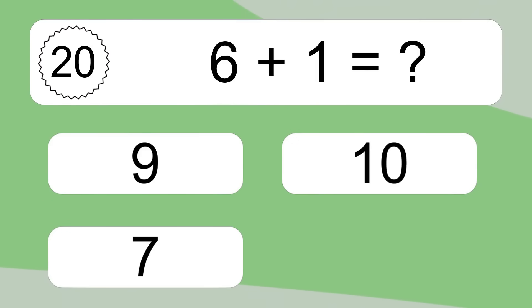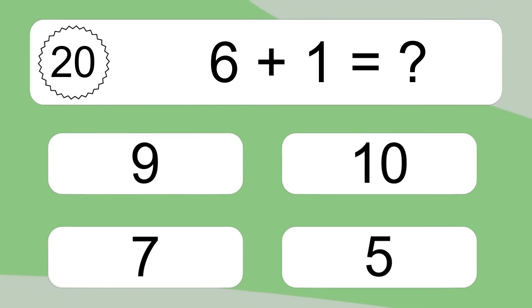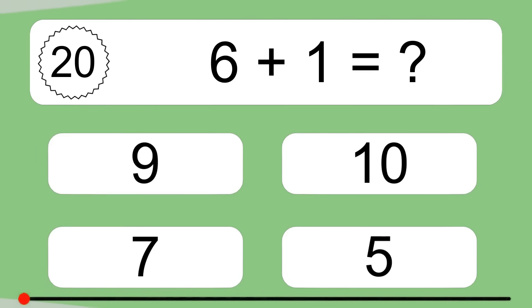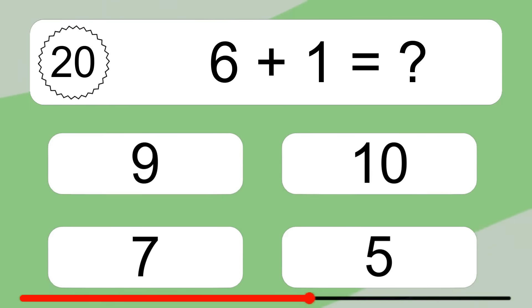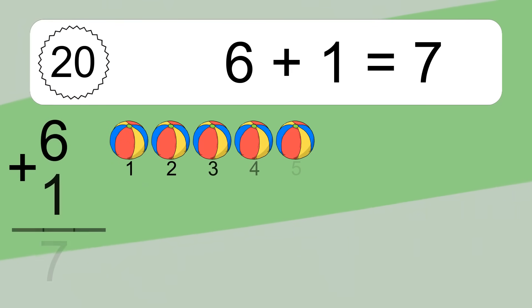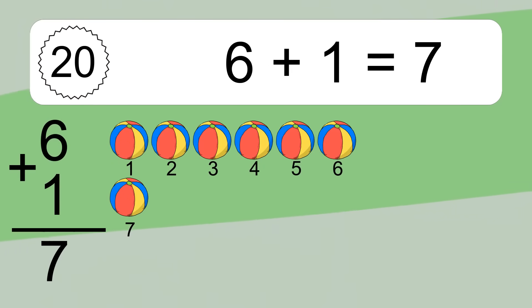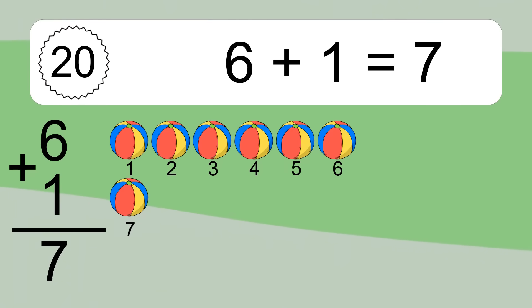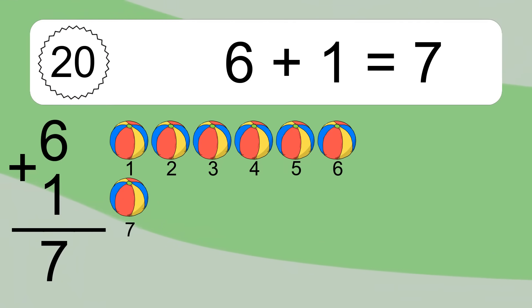6 plus 1 equals what? 6 plus 1 equals 7. Let's count it: 1, 2, 3, 4, 5, 6, 7.